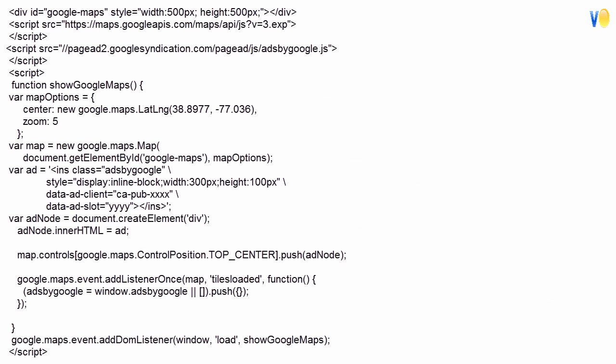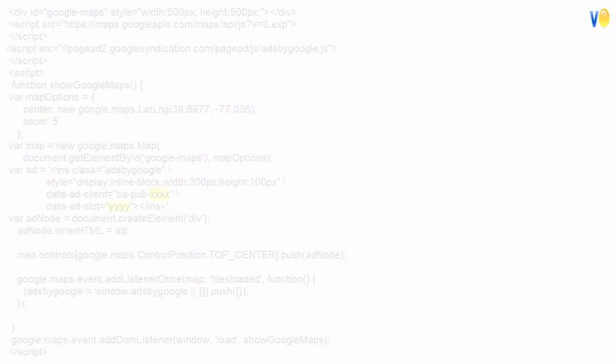You just need this script. Paste this script where you want the Google Map, either in the sidebar or in between the post. You have to replace X with your AdSense publisher ID and Y with AdSlot.